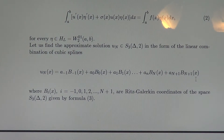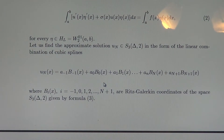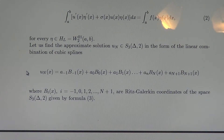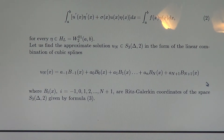These coordinates in the range from minus 1, zero, up to n+1 are not identically equal to zero on the interval (a, b), and therefore they contribute to the linear combination. The other Ritz coordinates—B_{-2}, B_{-3}, and so on—are identically zero on (a, b), and B_{n+2}, B_{n+3}, up to infinity are also equal to zero on (a, b), so they do not contribute.